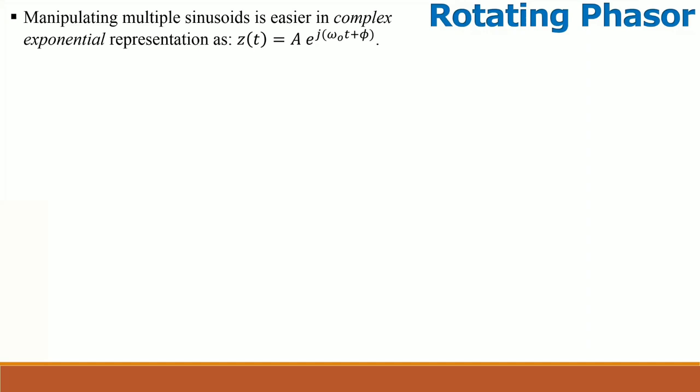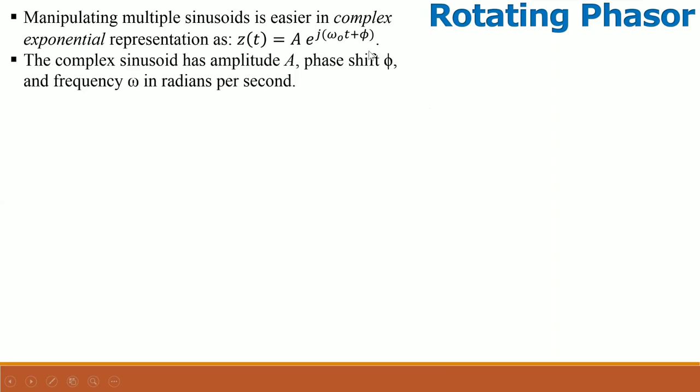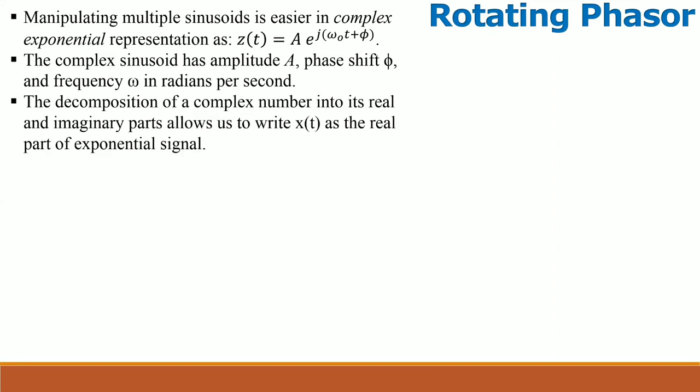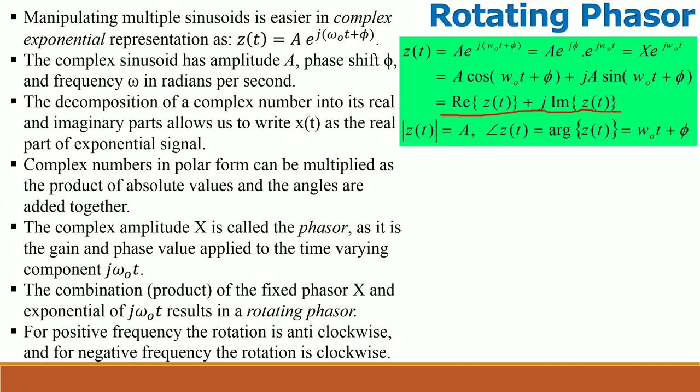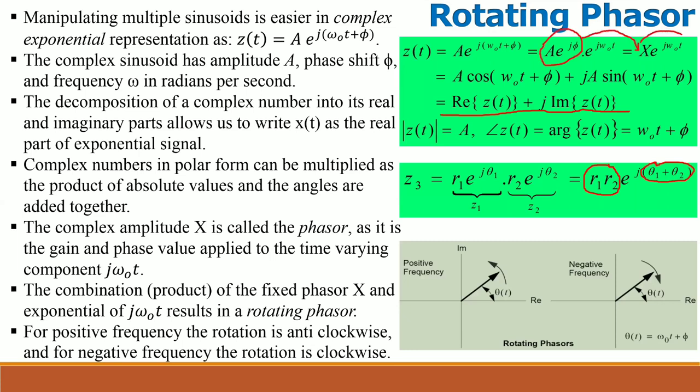Manipulating multiple sinusoids is actually easier when we form a complex exponential representation. Motivated by Euler's formula and the earlier definition of a cosine signal, we define the complex exponential signal as z(t) = A e^(jω₀t + φ). We see that the complex sinusoid has amplitude A, phase shift φ, and frequency ω₀ in radians per second. The decomposition of a complex number into its real and imaginary parts motivates us to consider the complex exponential signal, that is, we can write x(t) as the real part of the exponential part. Complex numbers in polar form can be easily multiplied as the product of absolute values of z₁ and z₂ and the angles are added together.